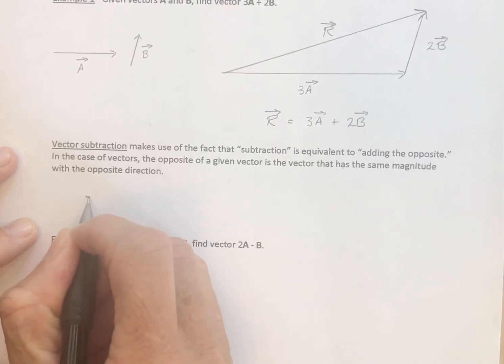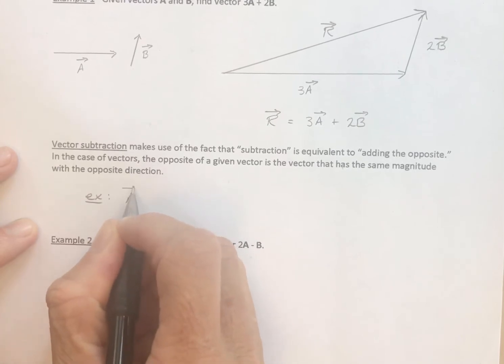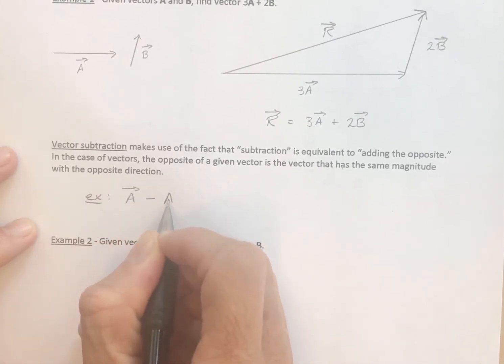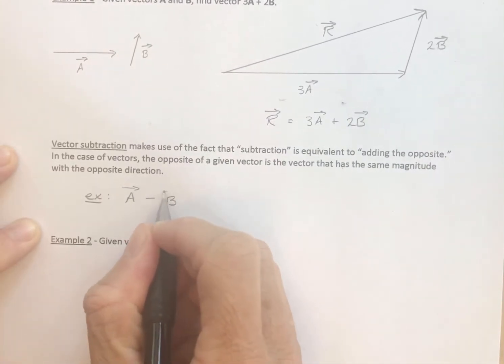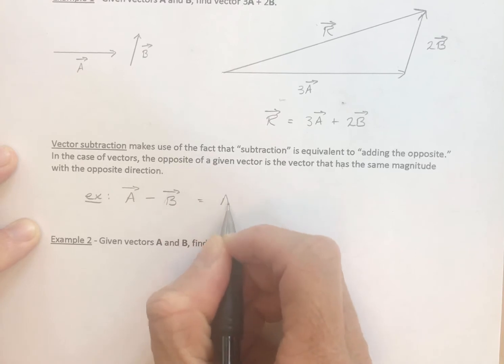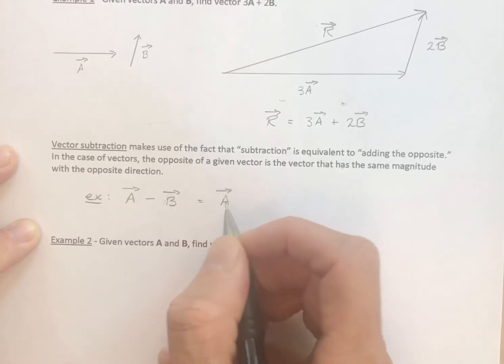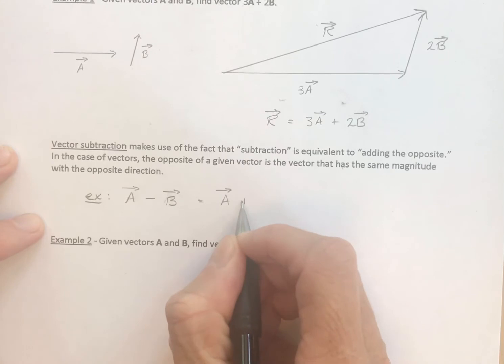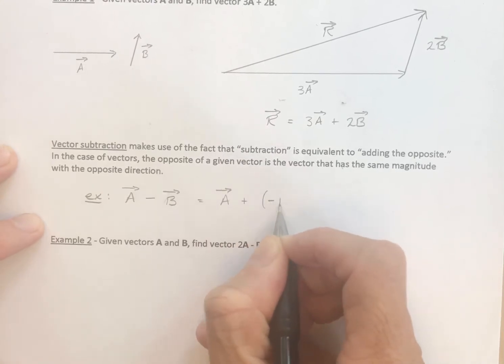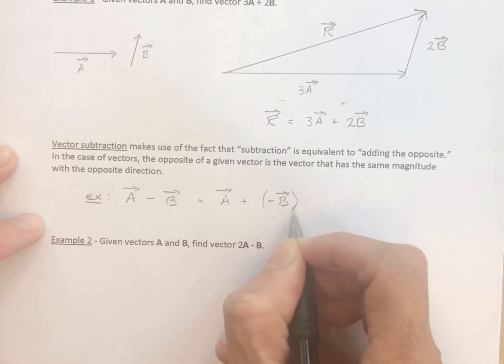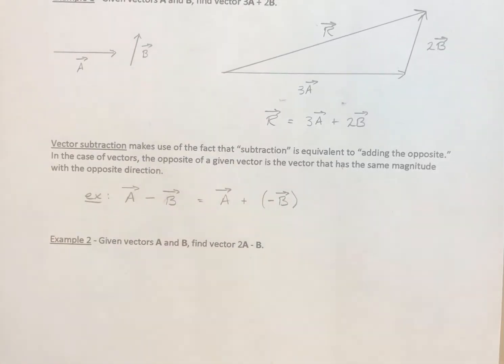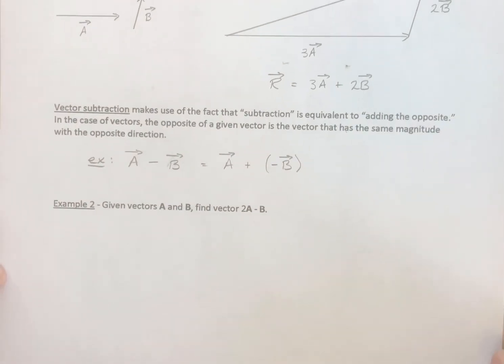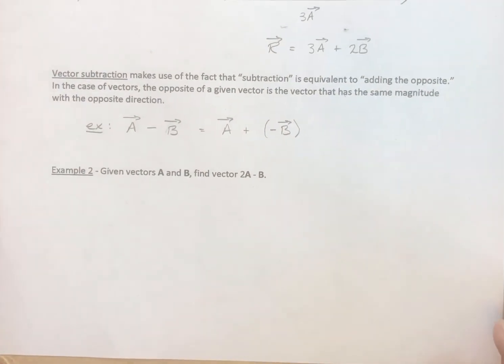So if I say to you I want to take vector a and I want to subtract vector b, well, the way we do that is we're going to take vector a and we're going to add the opposite of vector b. So we're going to replace subtraction with adding the opposite and then we're going to add because we know how to add very easily.